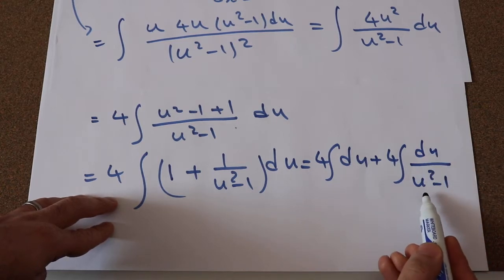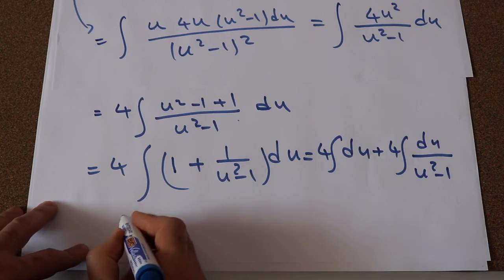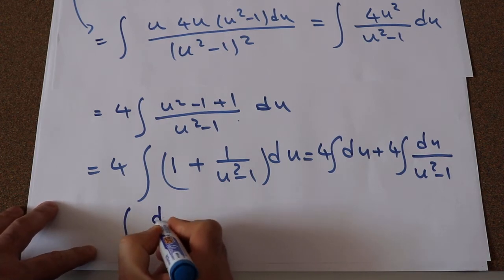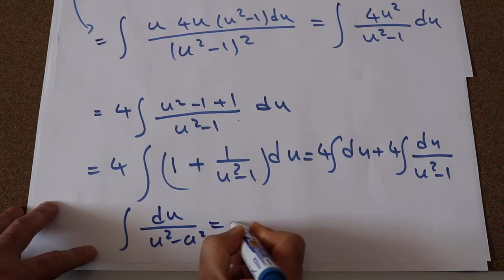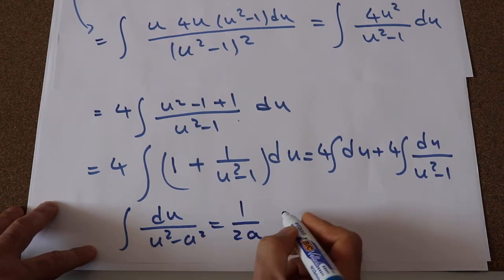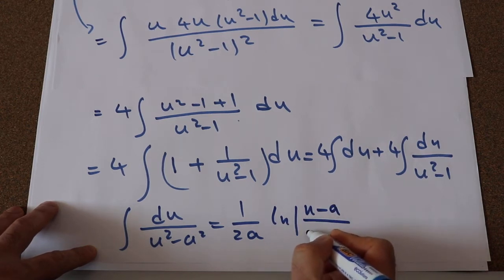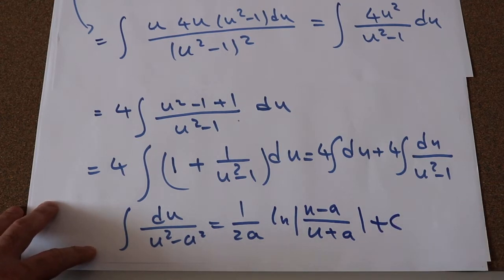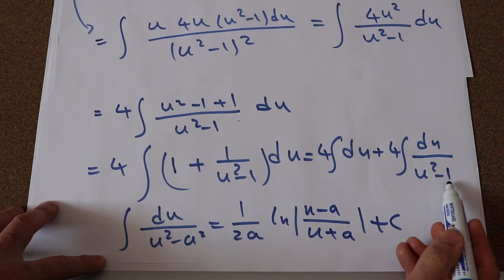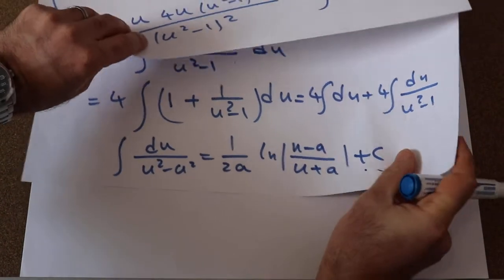For the integral of du divided by (u squared minus 1): from the table of integrals, you know that the integral of du divided by (u squared minus a squared) is equal to 1 divided by 2a, times ln of (u minus a) divided by (u plus a), plus c, which is the constant of integration. So if you compare this equation with this integral, you see that a is equal to 1.